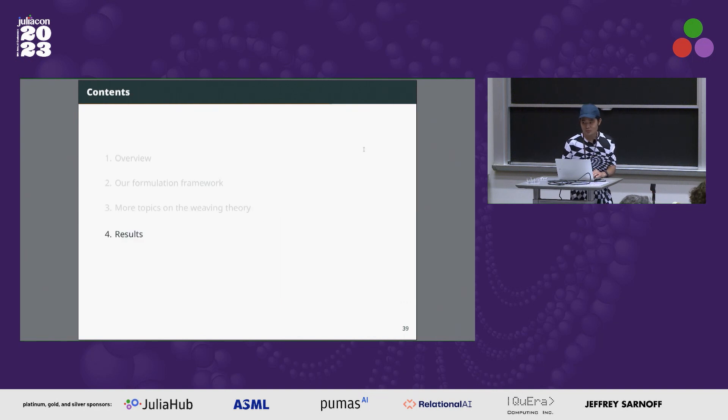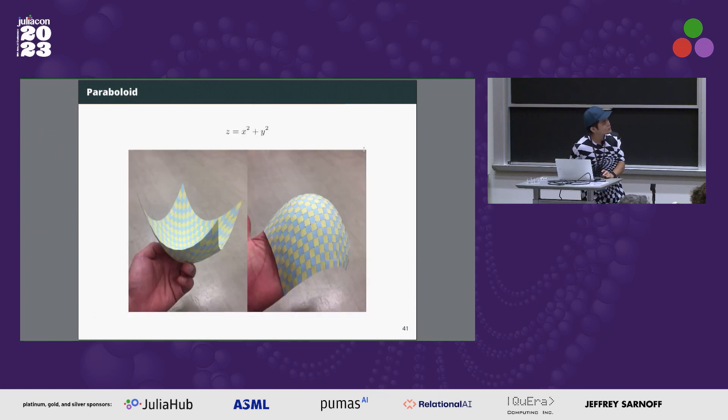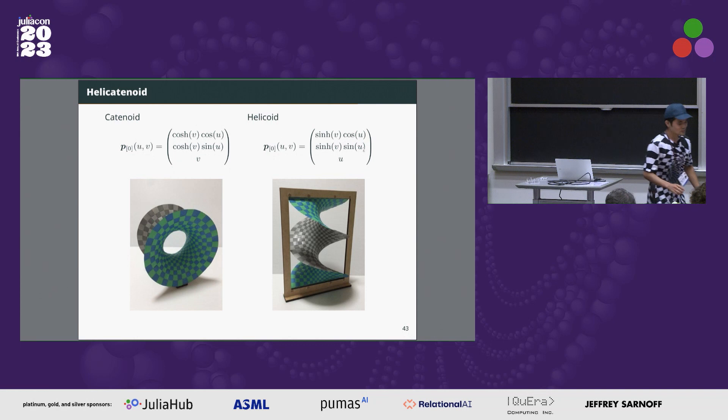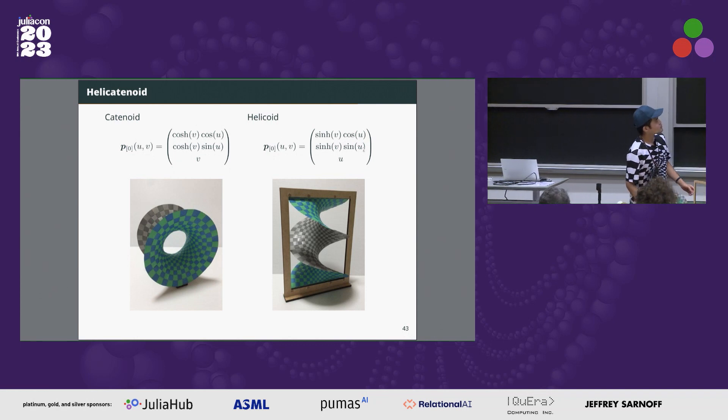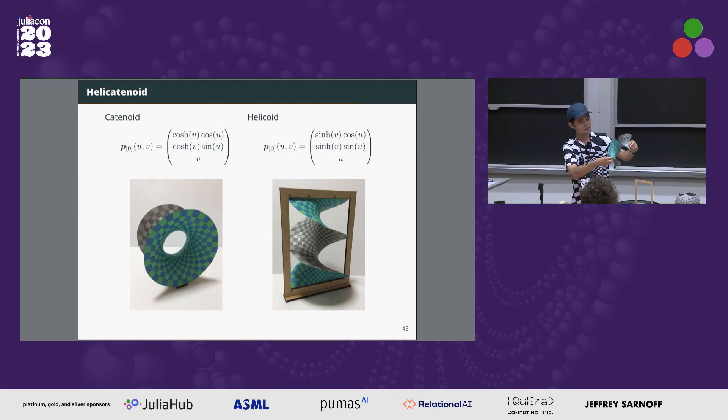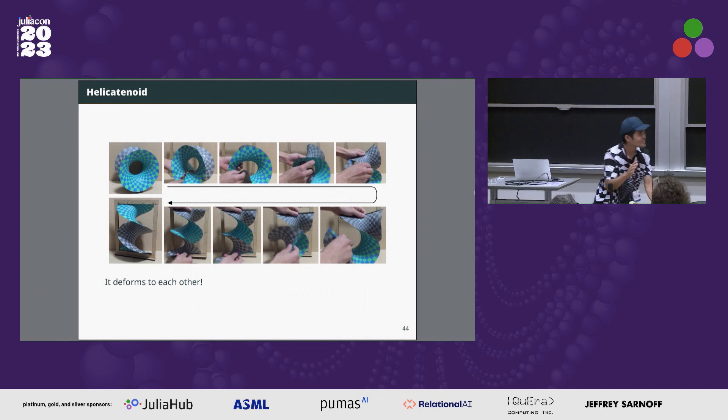I will show some examples: paraboloid and hyperbolic paraboloid. The paraboloid is the most simple one I've already shown. Hyperbolic paraboloid is like this. If I put this surface like this, there are straight lines in the surface. And the catenoid and the helicoid can be parameterized like this, and the most interesting thing is it can be deformed like this.